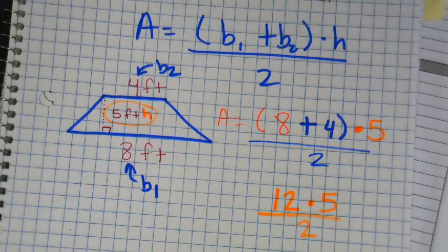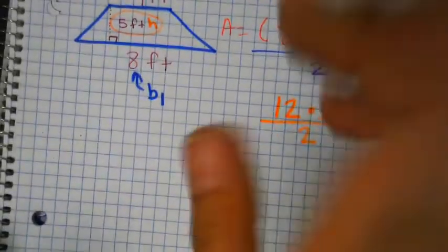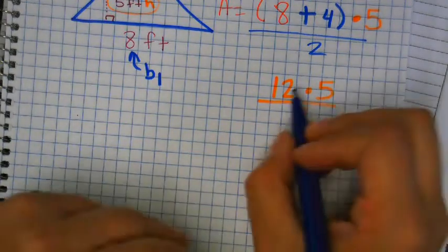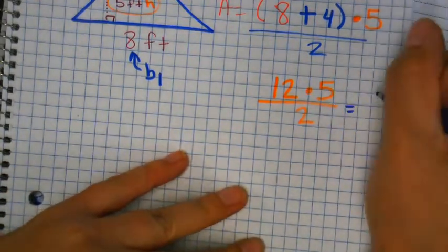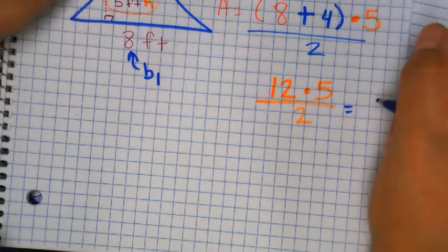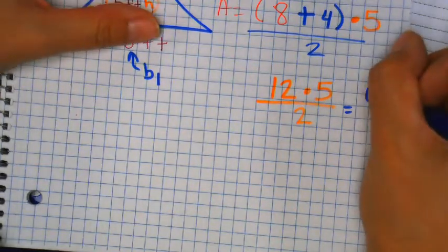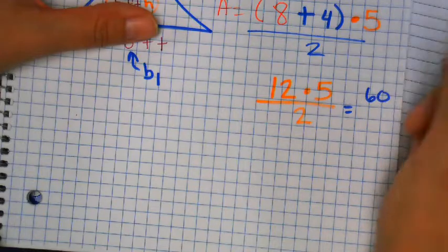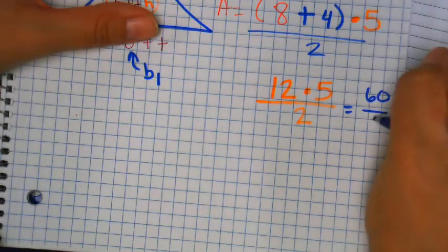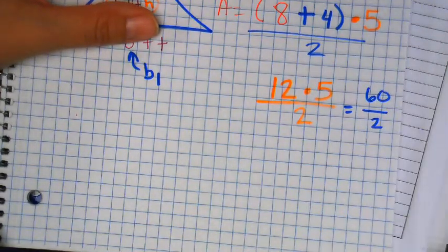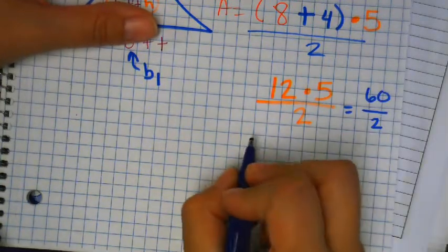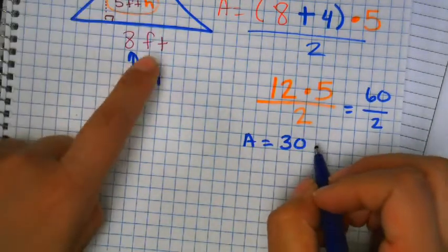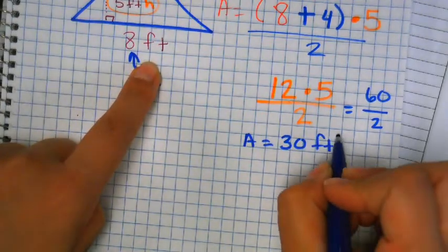What is twelve times five? Sixty. Then I'm going to take sixty and divide it by two — that gives us thirty. So our area is equal to thirty feet squared.